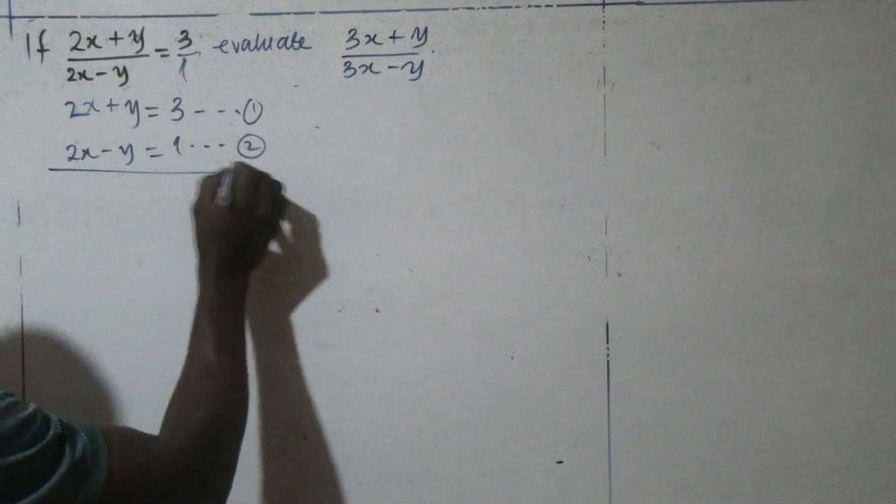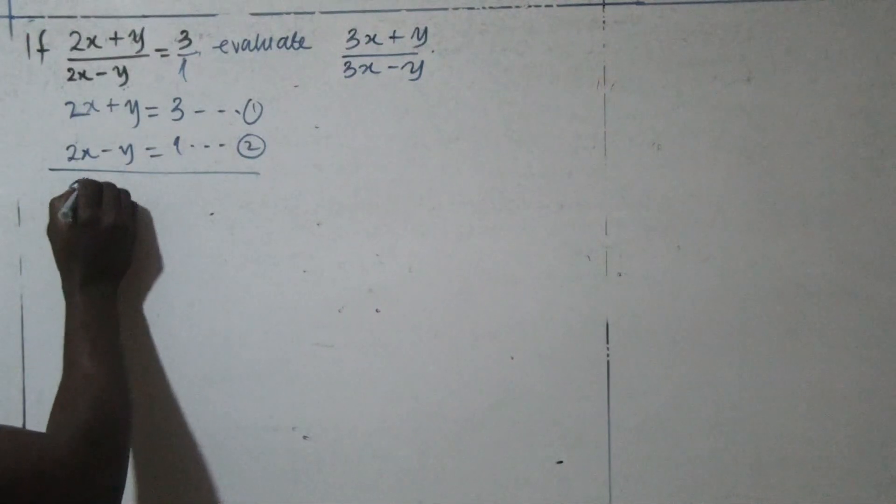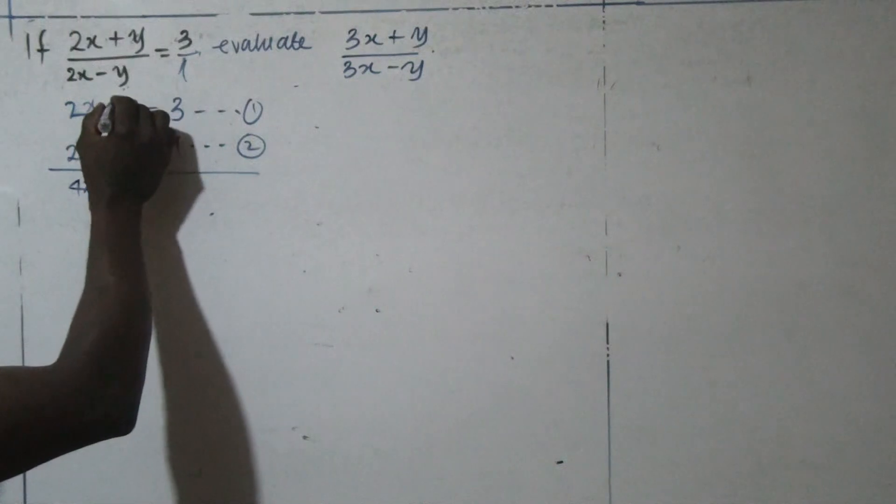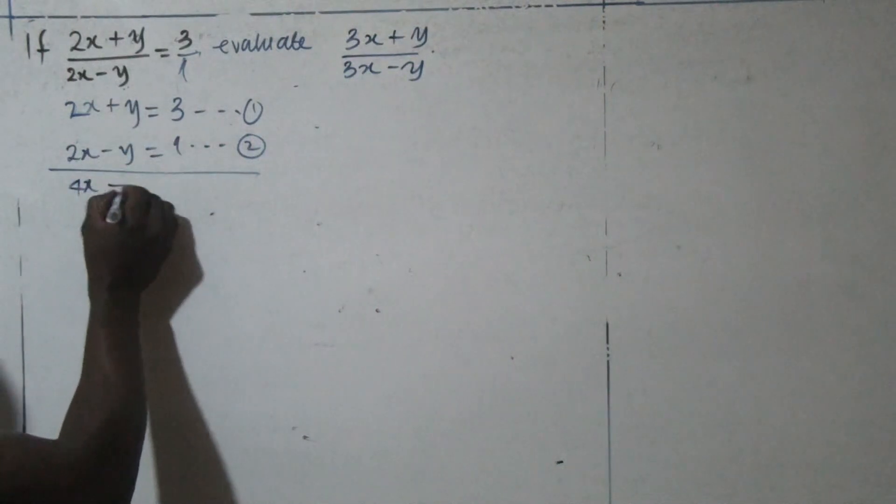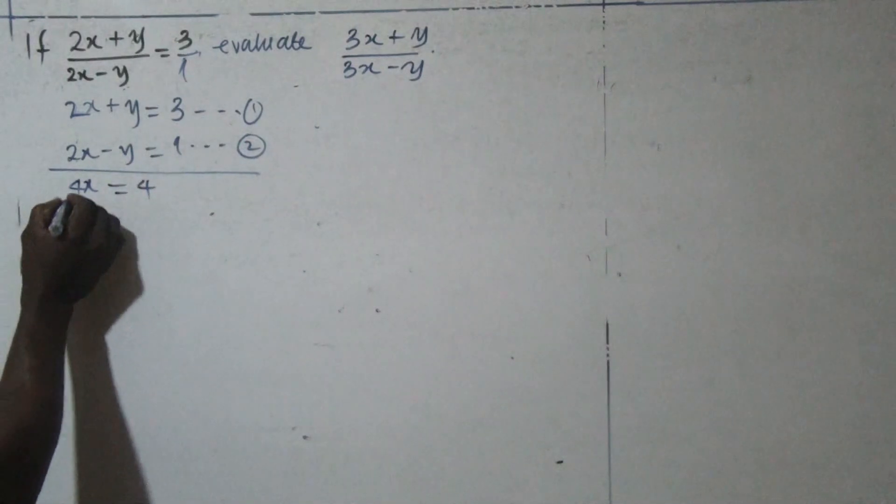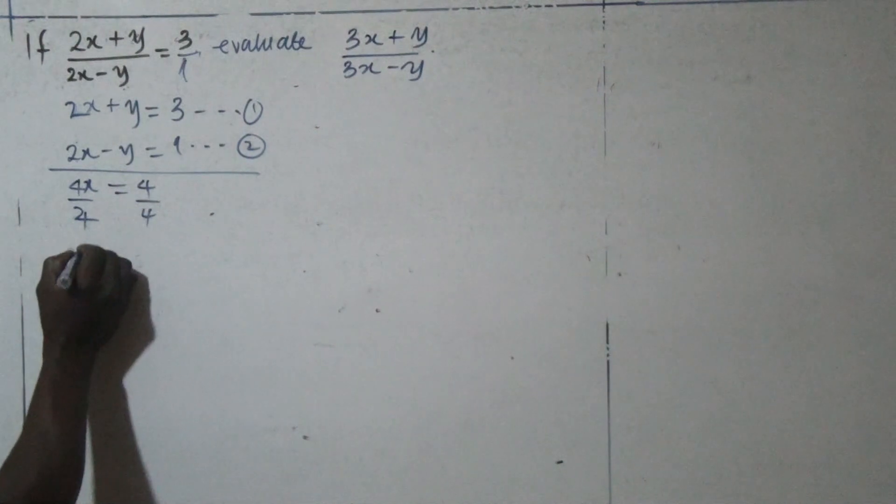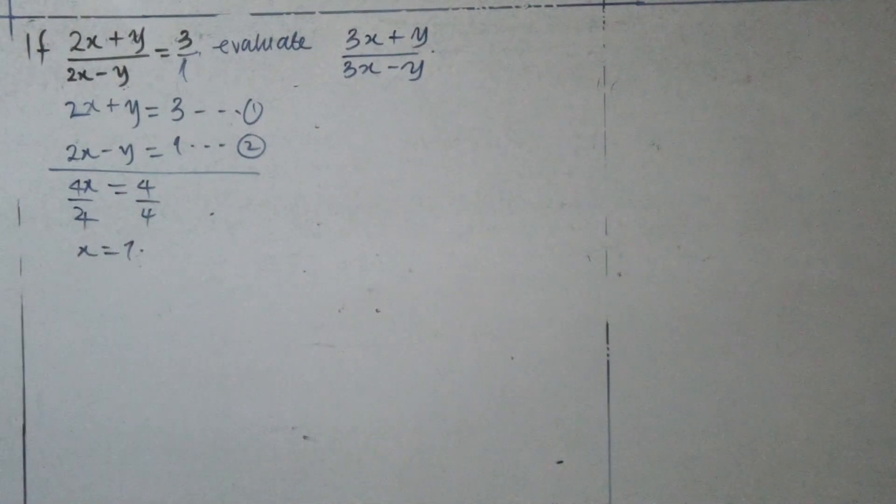So, by so doing, 2x plus 2x, that will give us 4x. Y plus minus y is off. And then, 3 plus 1, that will give us 4. So, the next thing, we divide both sides by 4. Divide both sides by 4, x is equals 1.